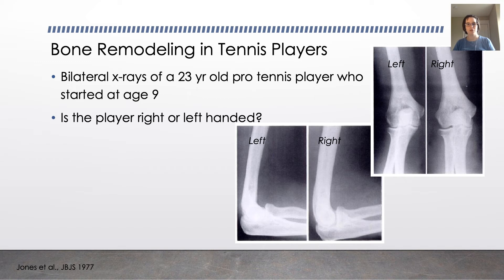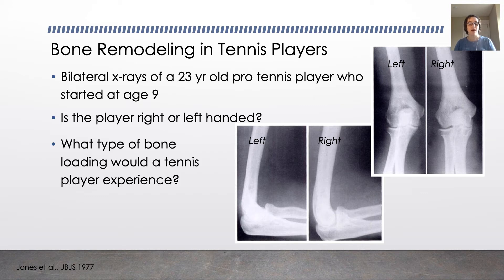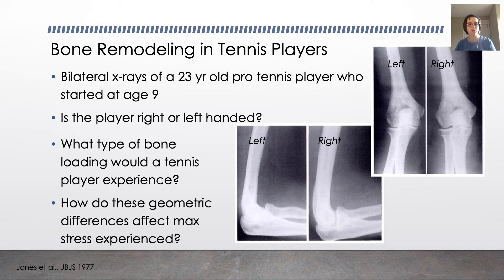If you said right handed, you're right, you can see that the bones on the right x-rays are much thicker, noticeably thicker, larger than the bones on the left side. And that bears the question mechanically of what types of loading would this tennis player's arm experience that would lead to this? And how do these geometric differences affect the maximum stress? So why might the body do this?